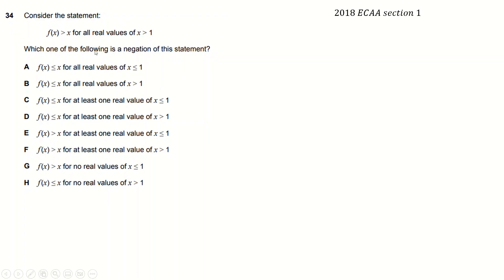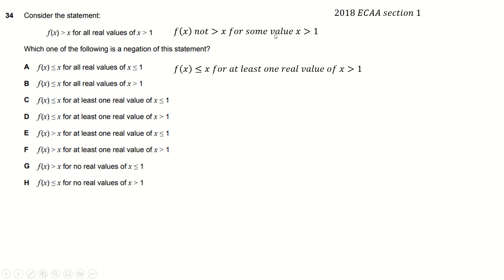A negation question: f(x) greater than x for all real values x greater than 1. The first thing you do is change 'is' to 'is not' — so f(x) is not greater than x. Then 'for all real' changes to 'for some value of x greater than 1'. Not greater than is the same as less than or equal to. And 'for some' can be written more properly as 'for at least one real value'. That directly gives the answer — quite an easy one, actually.